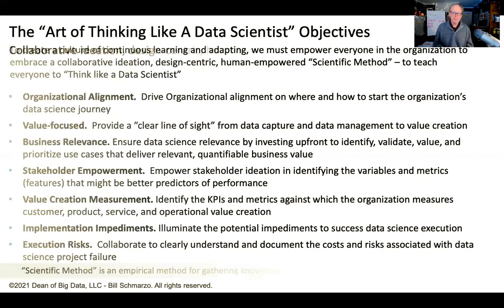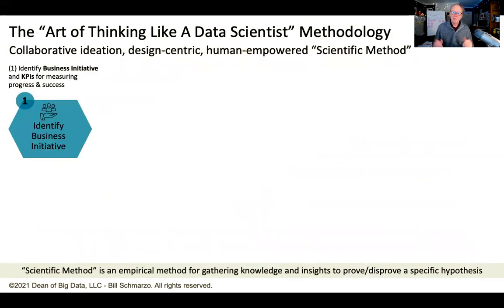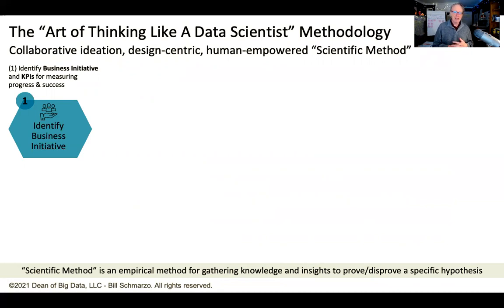So what does that process look like? The first step is to make sure we understand what problem we're trying to solve — what is the business initiative we're going to go after? Every organization, whether you're a profit or not-for-profit, has a business initiative, something you're trying to accomplish in the next 12 to 18 months. Maybe it's improving customer retention, maybe it's reducing unplanned operational downtimes, maybe you're a university trying to improve freshman retention or acceptance rates or five-year graduation rates. Every organization has business initiatives, and we want to identify and focus on one and identify the KPIs and metrics against which the organization is going to measure the success of that initiative.